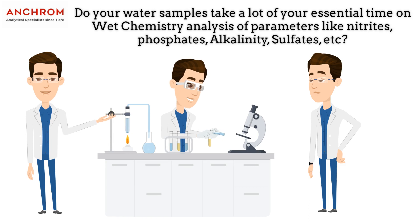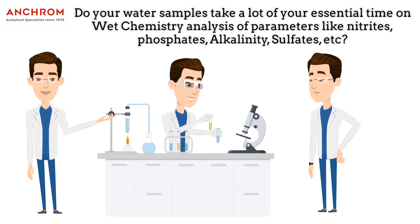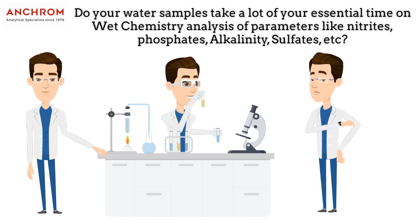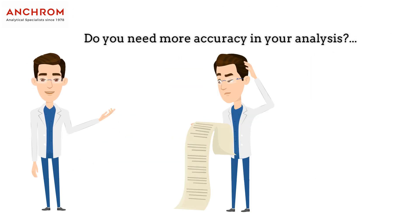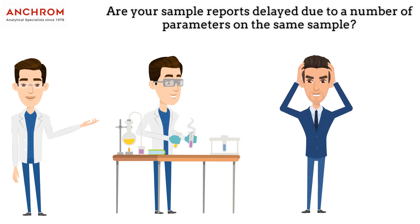Do your water samples take a lot of your essential time on wet chemistry analysis of parameters like nitrites, phosphates, alkalinity, sulfates, etc.? Do you need more accuracy in your analysis? Are you fed up of spending a lot of money on solvents and reagents? Are your sample reports delayed due to a number of parameters on the same sample?